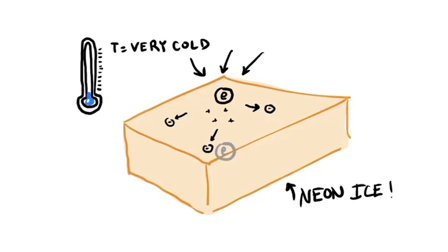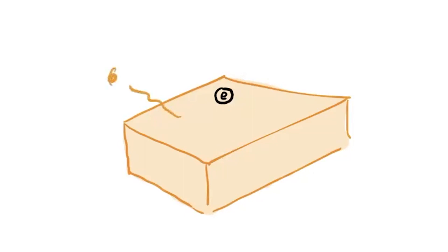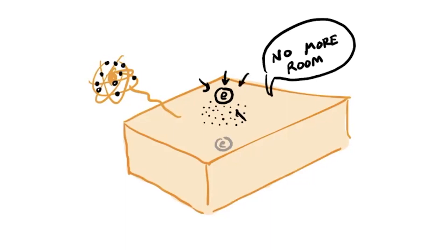Because opposite charges attract, the electron is attracted to the neon mirror. But as it gets close, something really interesting happens. It turns out that all the orbitals for the electrons to reside on the atoms of neon are filled, and there's no more room. The electron can't get any closer to the surface, it ends up trapped, just a few nanometers from the mirror.